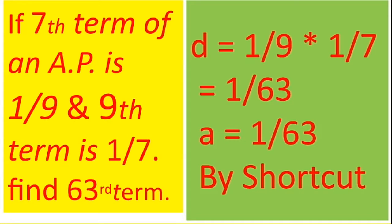The shortcut is just multiply 1 by 9 into 1 by 7, that is 1 by 63. D as well as A will be 1 by 63.